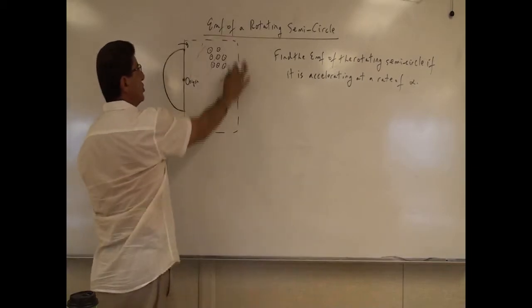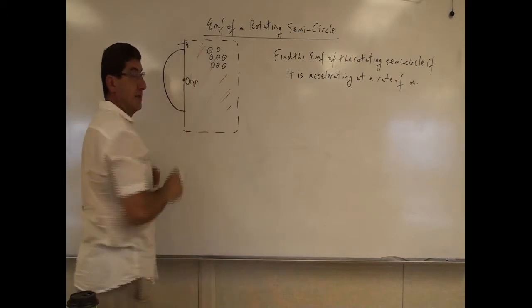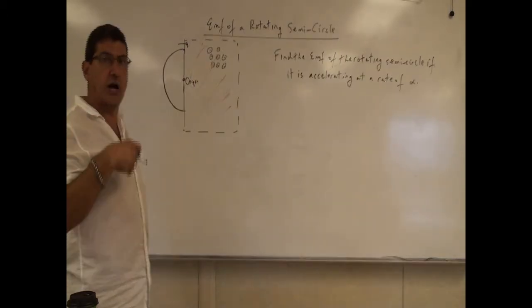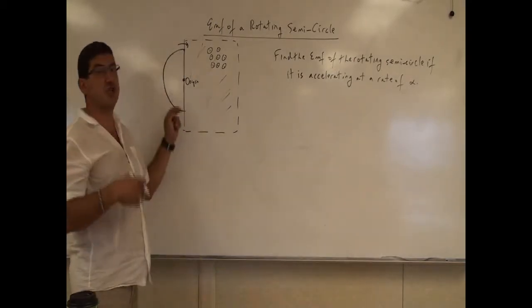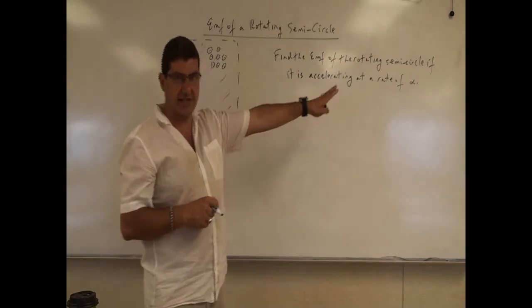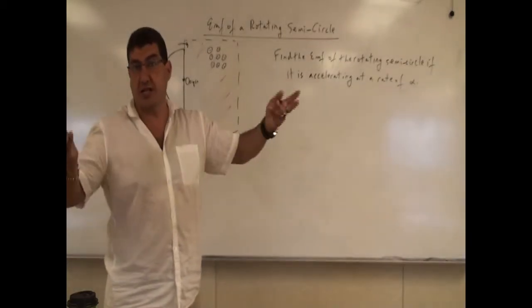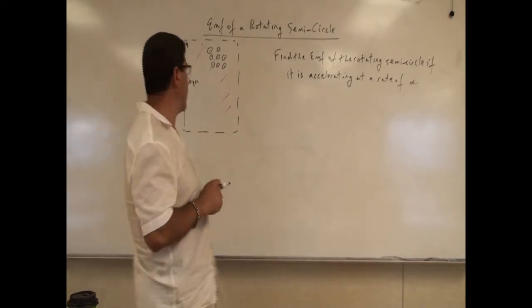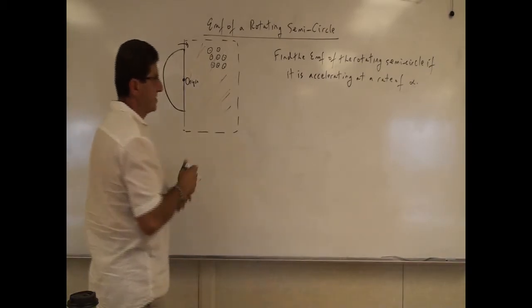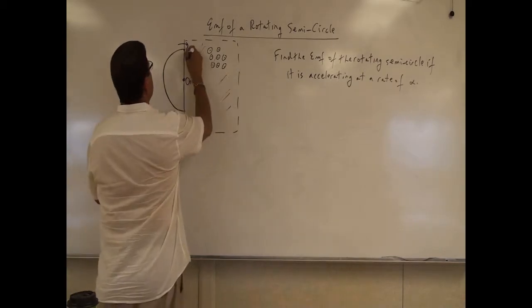The magnetic field exists in this region only. So as the semicircle starts to enter that region, the magnetic flux through this wire starts increasing. The question is: how does the EMF in this wire change as a function of time? We'll first do it where alpha is constant, and then we'll do a case where the rotational acceleration is not constant.